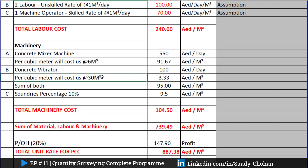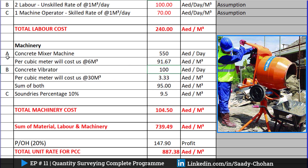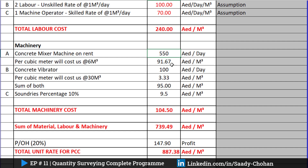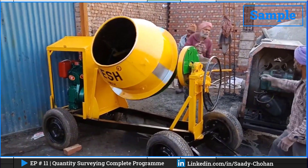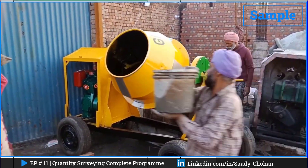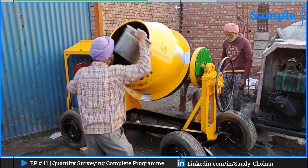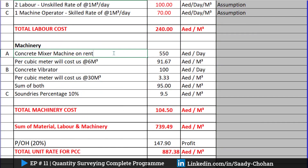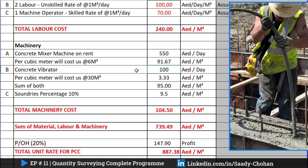Next is machinery. I've considered a concrete mixer machine costing 550 AED per day on rent. To convert to a per-cubic-meter rate, I need to know how much the machine can do per day. I've assumed it can finish 6 cubic meters per day. Dividing 550 by 6 gives 91 AED per cubic meter for the concrete mixer.